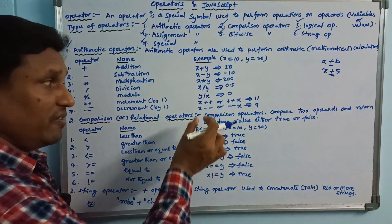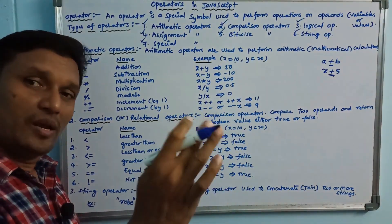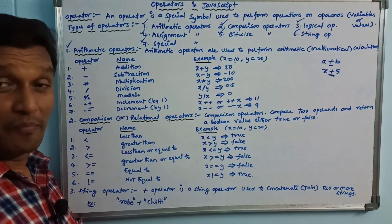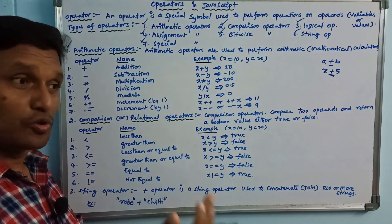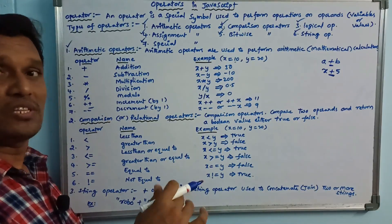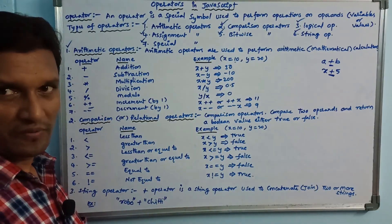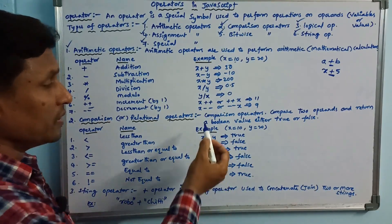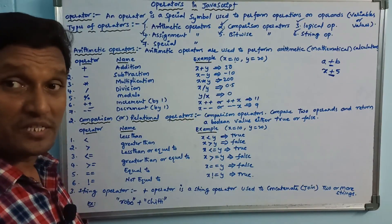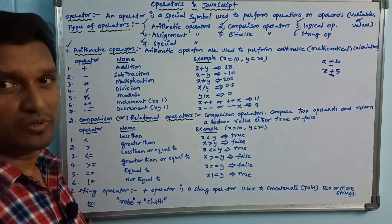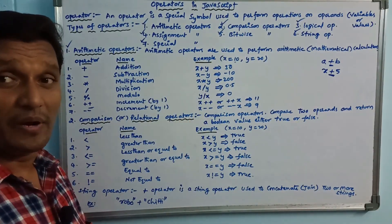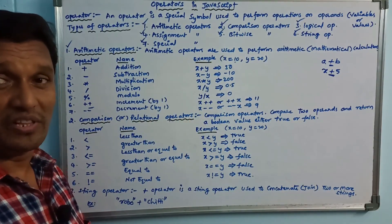We will learn about the usage of pre-increment and post-increment. Pre means the increment happens before the operation, and post means the increment happens after the operation. For example, if x value is 10, then x-- gives 9. So here we have covered arithmetic operators in JavaScript.